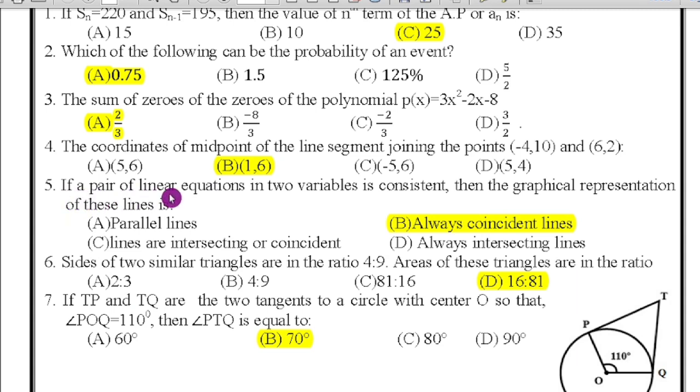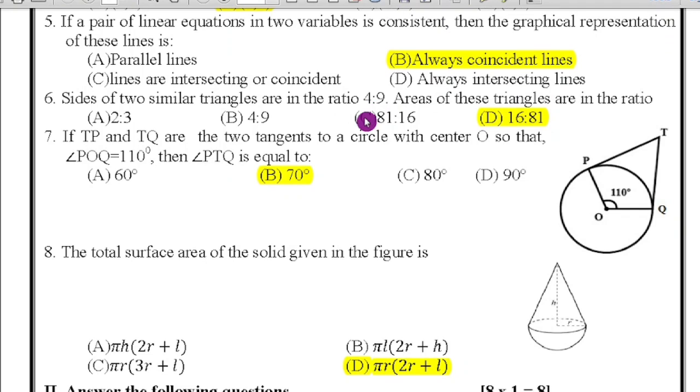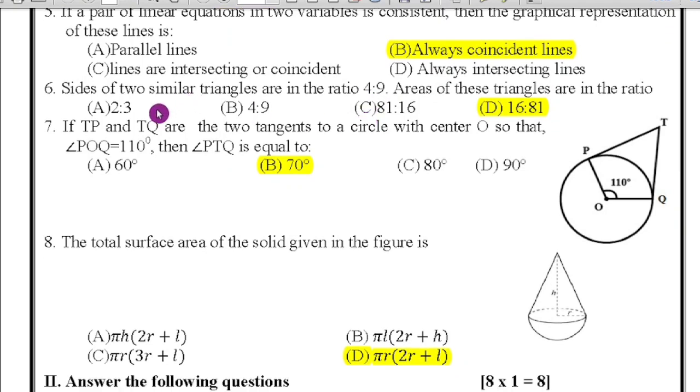Fifth question: if a pair of linear equations in two variables is consistent, then the graphical representation of these lines is parallel lines, coincident lines, intersecting lines, or always intersecting lines. That is always coincident lines, option B is the right answer. Sixth question: sides of two similar triangles are in the ratio 4:9. Areas of these triangles are in the ratio 2:3, 4:9, 81:16, or 16:81. We know that area of the triangle equals square of the sides. Therefore 4² is 16, 9² is 81. Therefore 16:81, option D is the right answer.